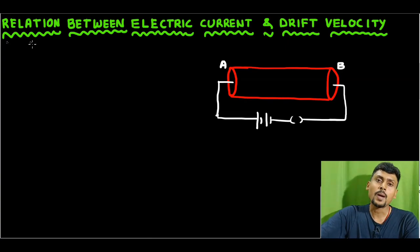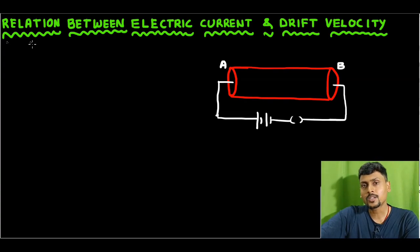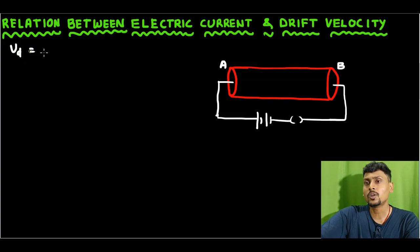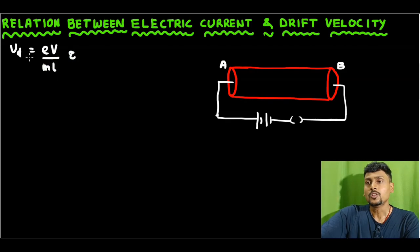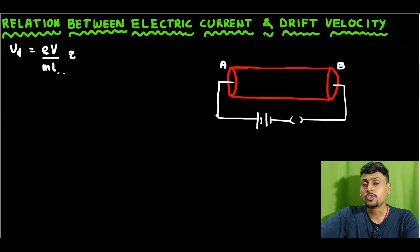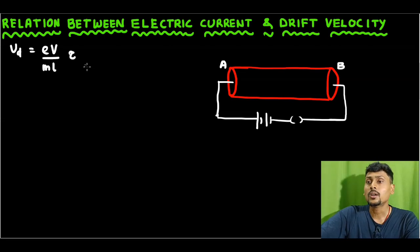In the previous lecture, I discussed the mechanism of flow of current in a conductor and we discussed the meaning of drift velocity. I derived the formula for drift velocity: Vd equals E into V divided by M into L into tau. Here, E is the charge of the electron, V is the potential difference across the conductor, M is the mass of the electron, L is the length of the conductor, and tau is the average relaxation time.